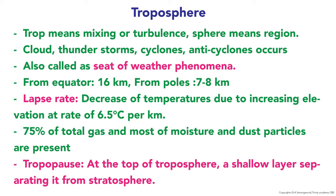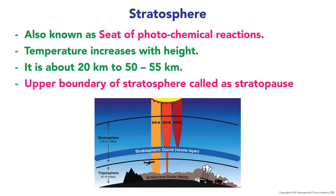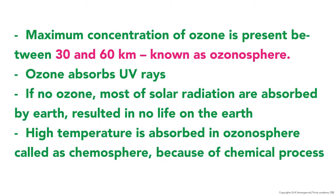The stratosphere is also known as the seat of photochemical reactions. Temperature increases with height. It extends from about 20 kilometers to 50–55 kilometers from Earth's surface. The upper boundary of the stratosphere is called the stratopause. The maximum concentration of ozone is present between 30 and 60 kilometers — that zone is called the ozonosphere. Ozone absorbs UV rays; without an ozone layer, most solar radiation would be absorbed by the Earth, resulting in no life. The high-temperature zone in the ozonosphere is called the chemosphere because chemical processes take place there.